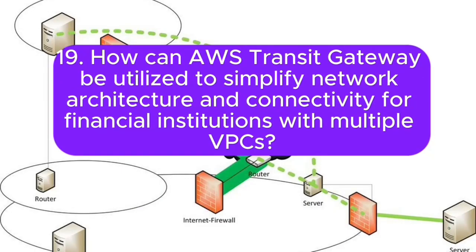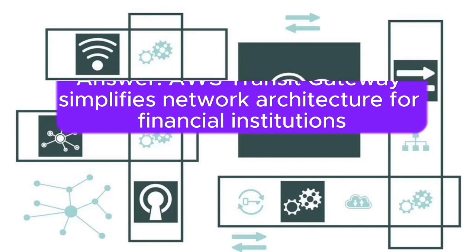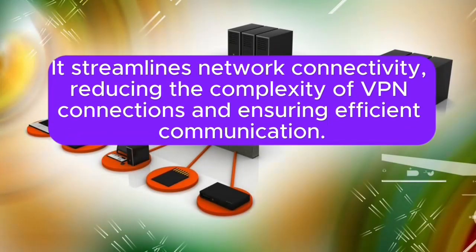Question 19: How can AWS Transit Gateway be utilized to simplify network architecture and connectivity for financial institutions with multiple VPCs? Answer: AWS Transit Gateway simplifies network architecture for financial institutions by acting as a hub for connecting multiple VPCs and on-premises networks. It streamlines network connectivity, reducing the complexity of VPN connections, and ensuring efficient communication.